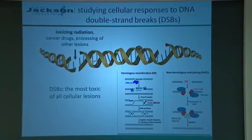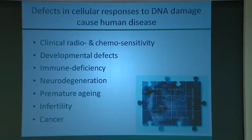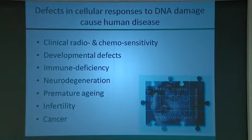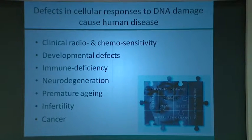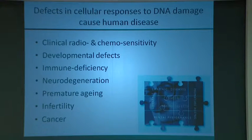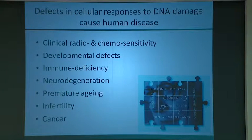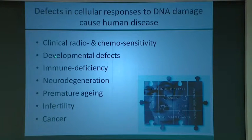We've known for many years that defects in DNA repair — through inheritance or newly acquired mutations — give rise to disease. Humans with defects in these pathways have a range of pathologies, most notably cancer, but we're also increasingly seeing developmental defects, immune deficiencies, and neurodegeneration as a result of DNA repair defects.